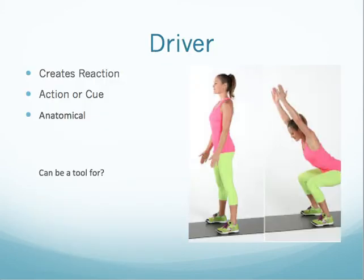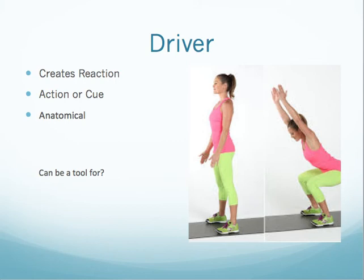A driver creates a reaction — it's a cue, an anatomical position that drives movement. For example, if Susie squats down and is having a hard time with core activation, you say 'drive your hands up overhead.' You've just created an arm driver that creates tension in the system and her squat looks a lot better. You might have someone reach down at ankle height to get more glute or quad recruitment. Drivers can recruit muscles as you want them recruited, and also serve as an unconscious cue for someone to move in the pattern you want.